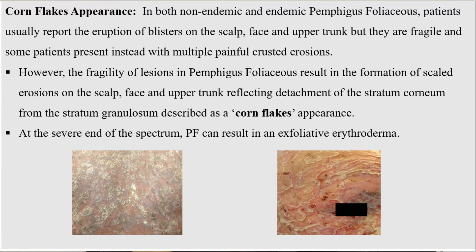In pemphigus foliaceous, the blisters present are very fragile. When these fragile lesions rupture, they result in the formation of scalded erosions on the face, scalp, and upper trunk, giving a cornflakes appearance due to detachment of the stratum corneum from the stratum granulosum. In severe cases, pemphigus foliaceous can result in exfoliative erythroderma.